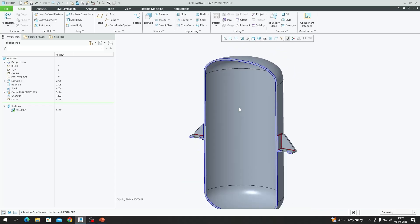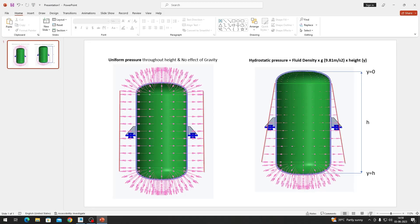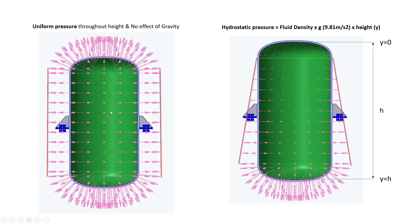Before we get into the pressure load analysis, let's look at two different ways of performing it. The first method is called uniform pressure load, where you select the internal surfaces of the tank and apply a uniform pressure. This is used when you have LPG or any other pressurized gas inside the tank, as it imparts a constant pressure across all surfaces in ideal conditions.